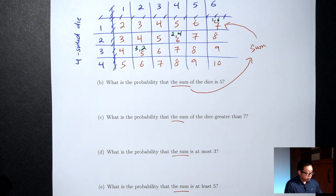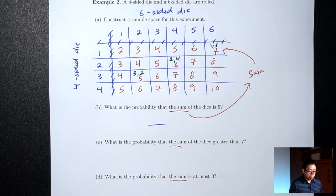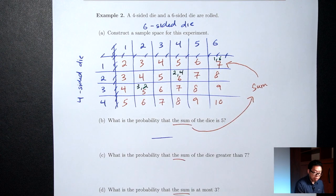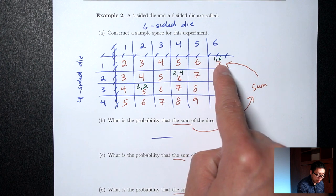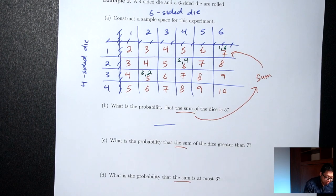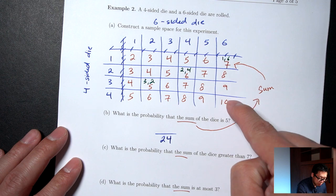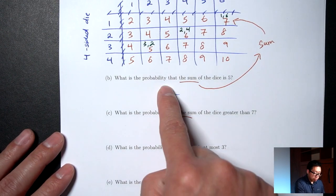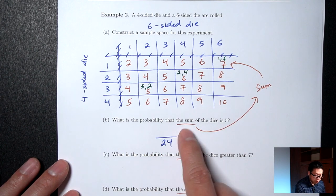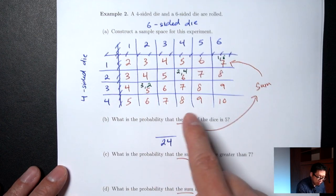Part B: what's the probability that the sum is 5? On the bottom, count how many outcomes are in the sample space — the boxes on the inside. There are 6 columns and 4 rows, so 6 × 4 = 24 boxes. On top, how many have a sum of 5? Looking at the red numbers: 1+4=5, 2+3=5, 3+2=5, 4+1=5 — that's 4. Don't count the numbers on the outside. Probability is 4/24.